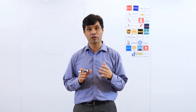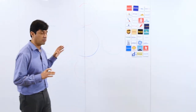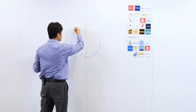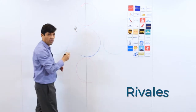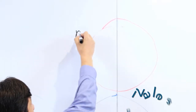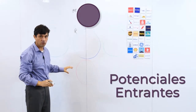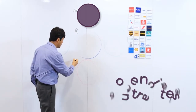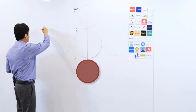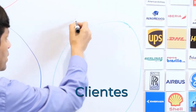Lo primero que hay que hacer en estas 5 fuerzas es identificar cuáles son las fuerzas. Para eso hemos hecho este esquema en donde vamos a identificar en el centro a los rivales, en la parte superior a las empresas potenciales entrantes, en la parte inferior a los bienes y servicios sustitutos, en la parte izquierda a los proveedores y en la parte derecha a los clientes.